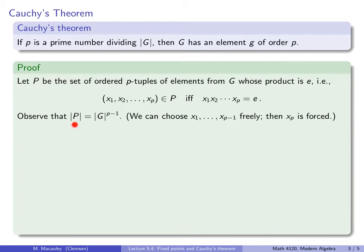Observe that the size of the set is |G|^(p-1). And the reason is because we can freely choose the first p-1 elements, however we want to. And so we have |G| choices for x₁, we have |G| choices for x₂, and then we have |G| choices for x₃, and so forth.